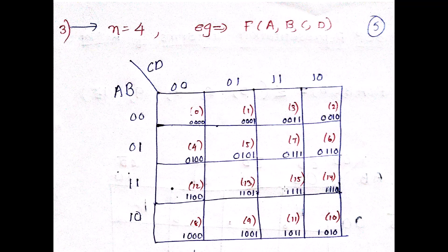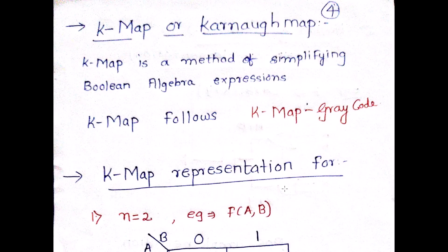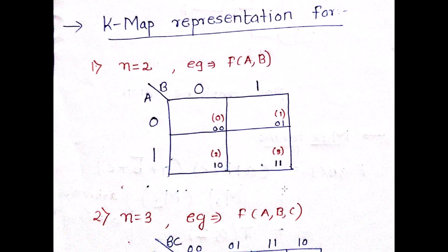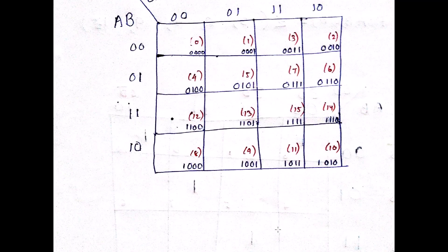You should have these K-map representations by heart. For a 2-variable K-map, you have cells 0, 1, 2, 3. For a 3-variable K-map, you have cells 0 through 7. For a 4-variable K-map, you have cells 0 through 15.